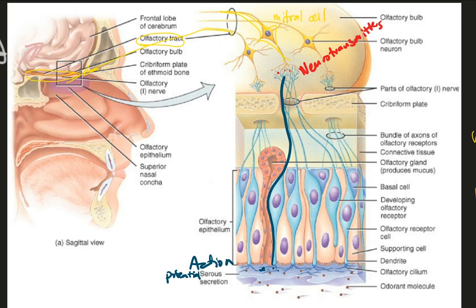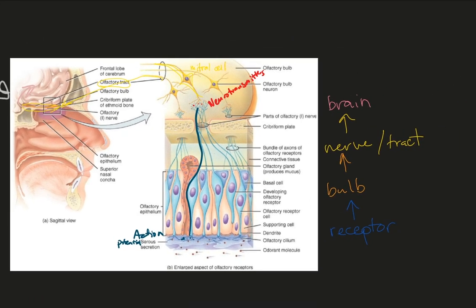Interestingly, the olfactory nerve doesn't pass through the thalamus as seen in our other senses. So in summary, the message gets sent from the receptor to the olfactory bulb, to the olfactory nerve, to the tract, and to the brain.